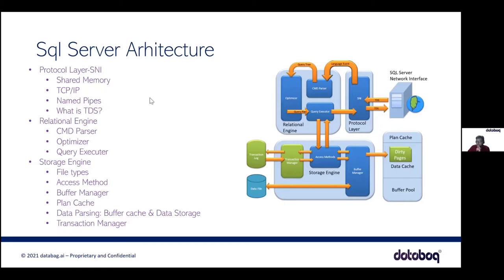Communication through these channels happens via TDS — Tabular Data Stream. These are network packets through which data is transmitted and received. It's a channel through which data is received and processed. SQL server consists of basically three things: the protocol layer, the relational engine, and the storage engine. After the request passes through the protocol layer, it comes to the relational engine. The relational engine consists of three parts: command parser, optimizer, and query executor.